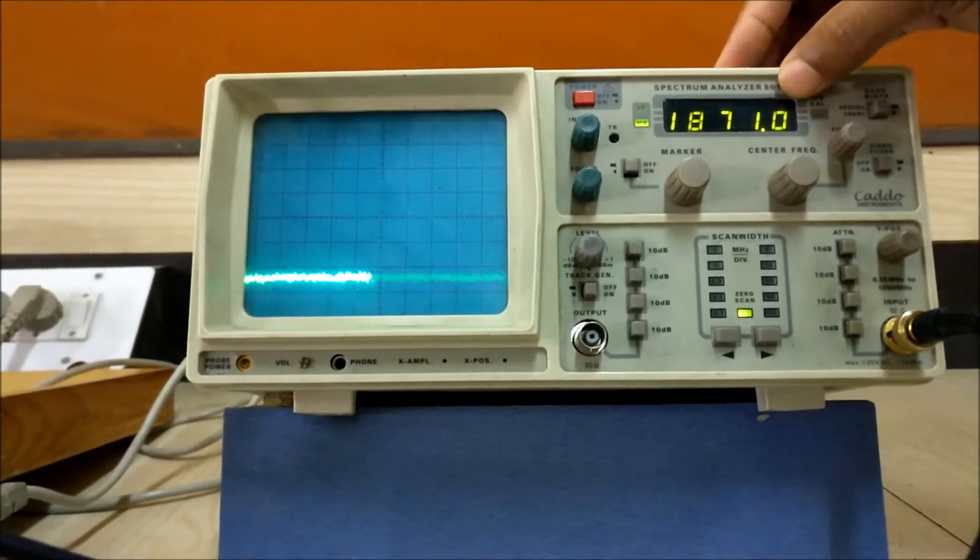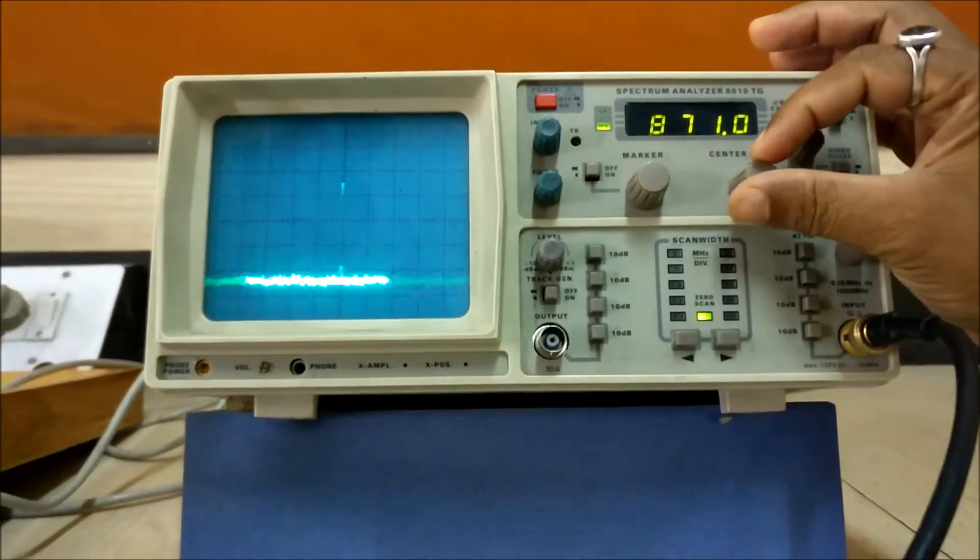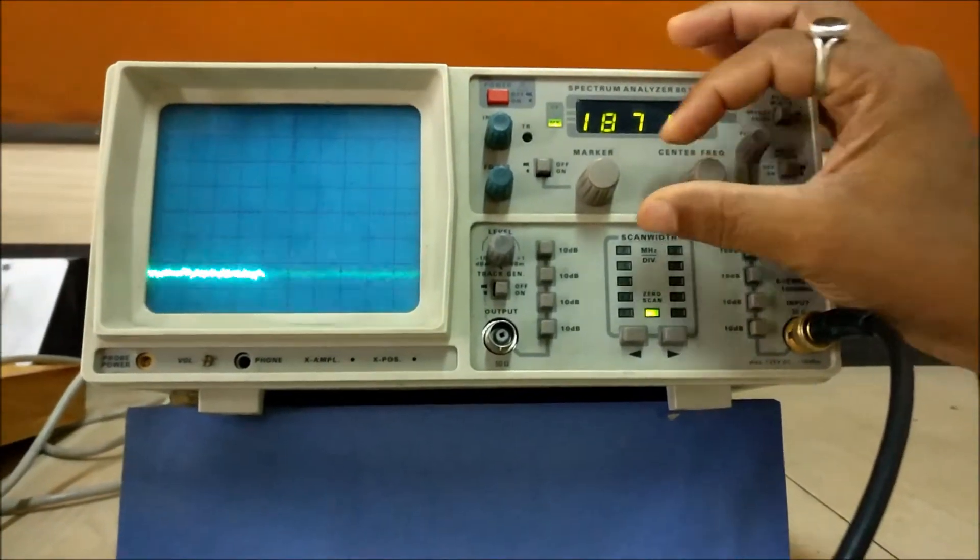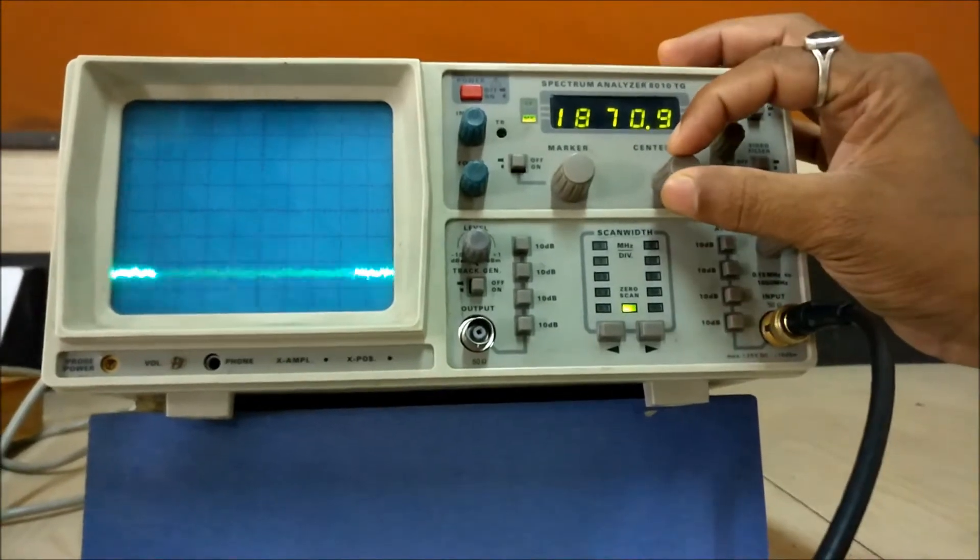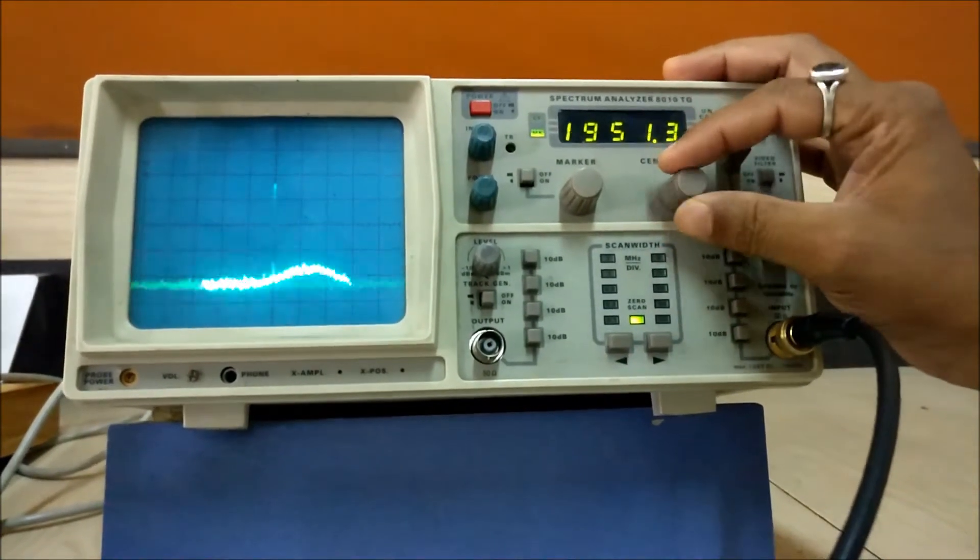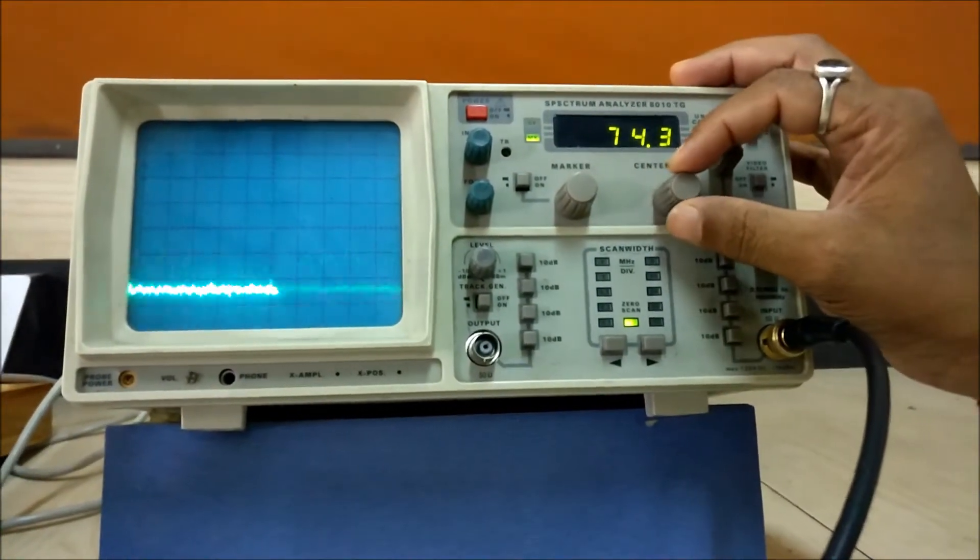Zero scan means we have selected all the frequency range of this spectrum analyzer, that is maximum is 1050 megahertz. Now I am changing it to 100 megahertz. First I have to set it to 100 megahertz.